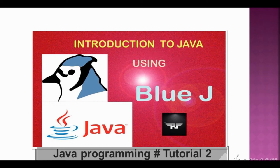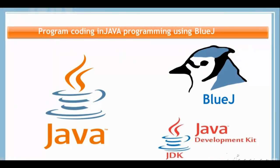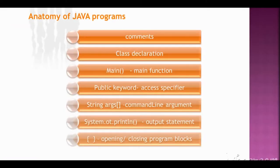In this tutorial I'm going to explain Java programming using BlueJ. This is the second tutorial in Java programming. For program coding in Java we will use the BlueJ platform as our IDE, and in the background we will have the Java Development Kit which will help us execute our programs.